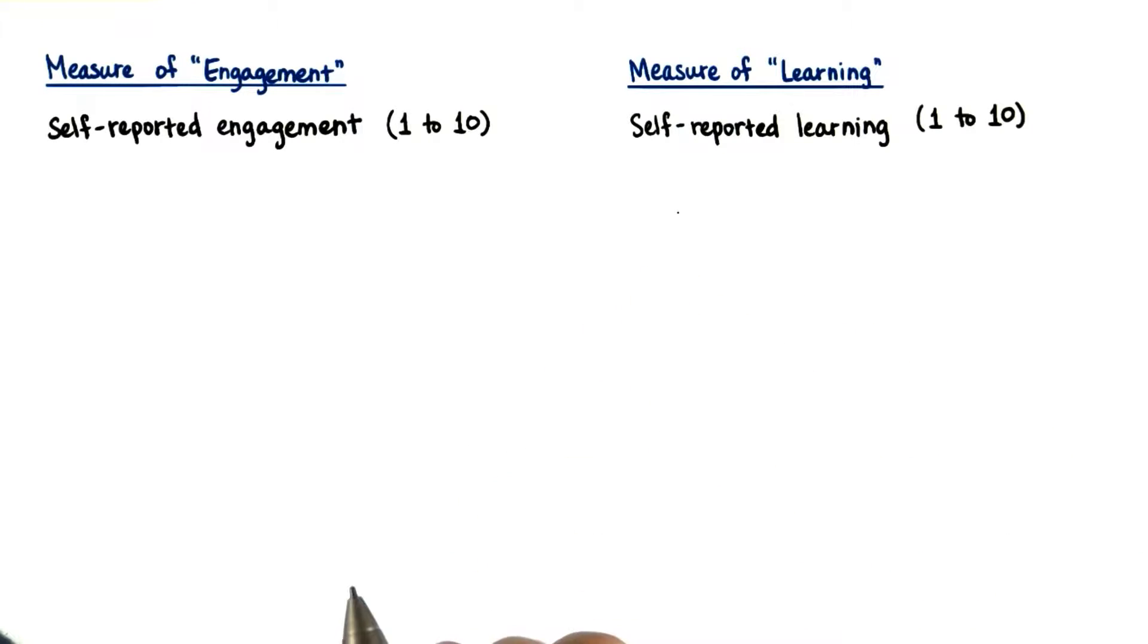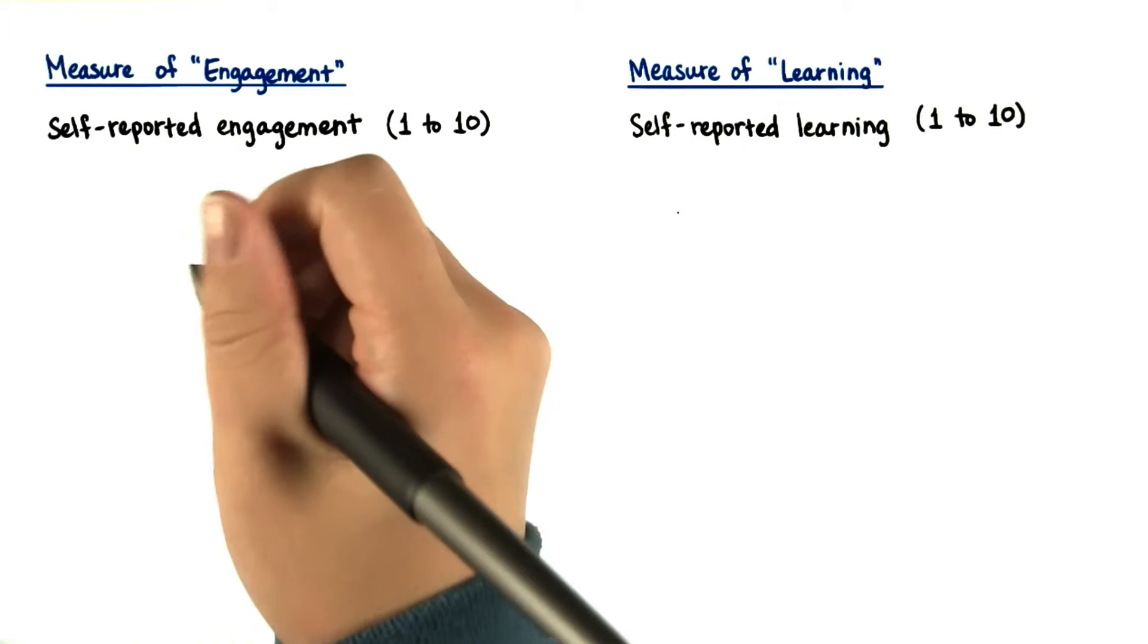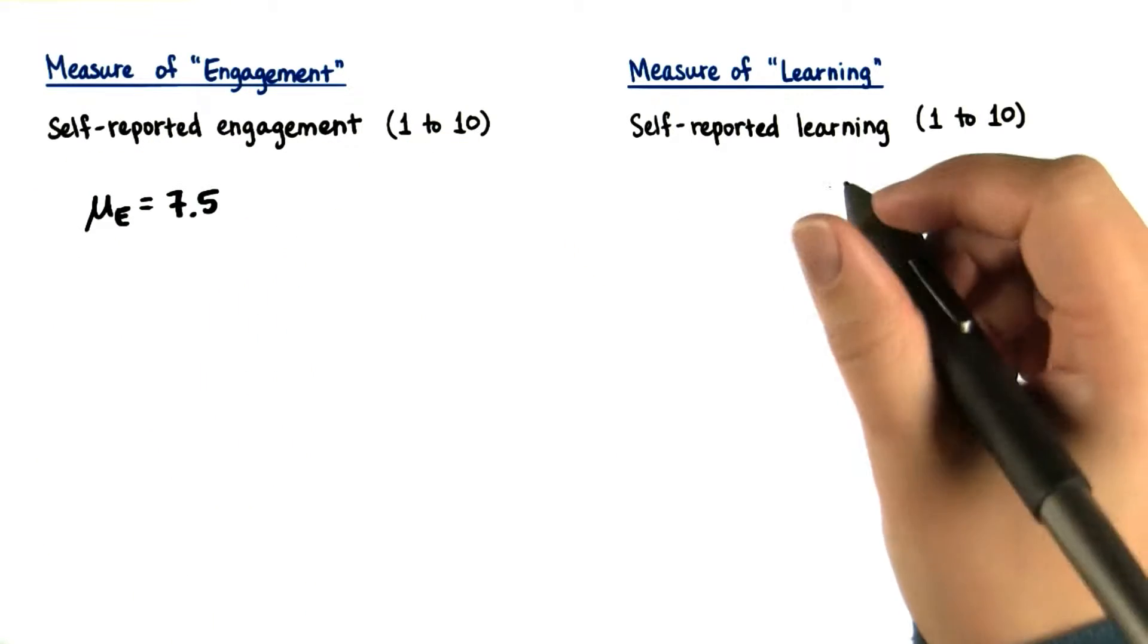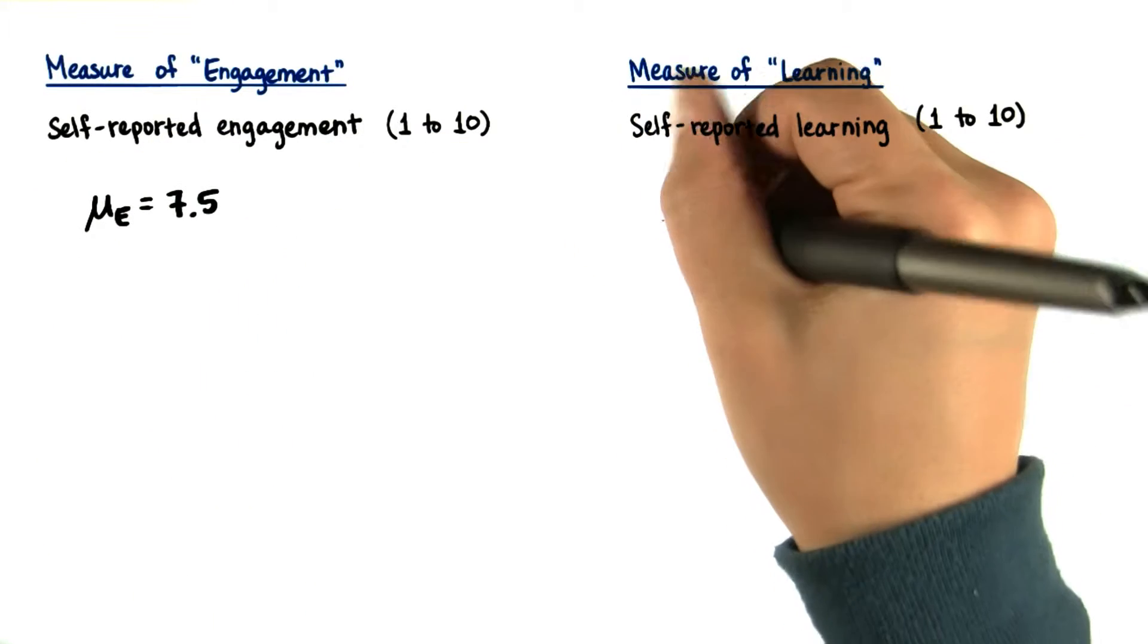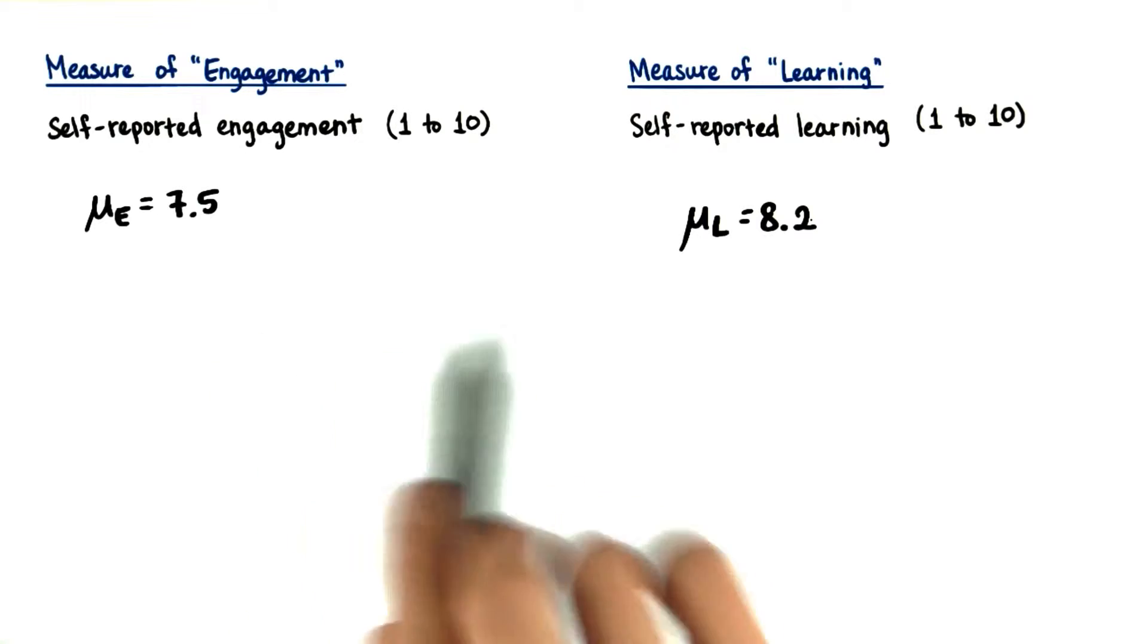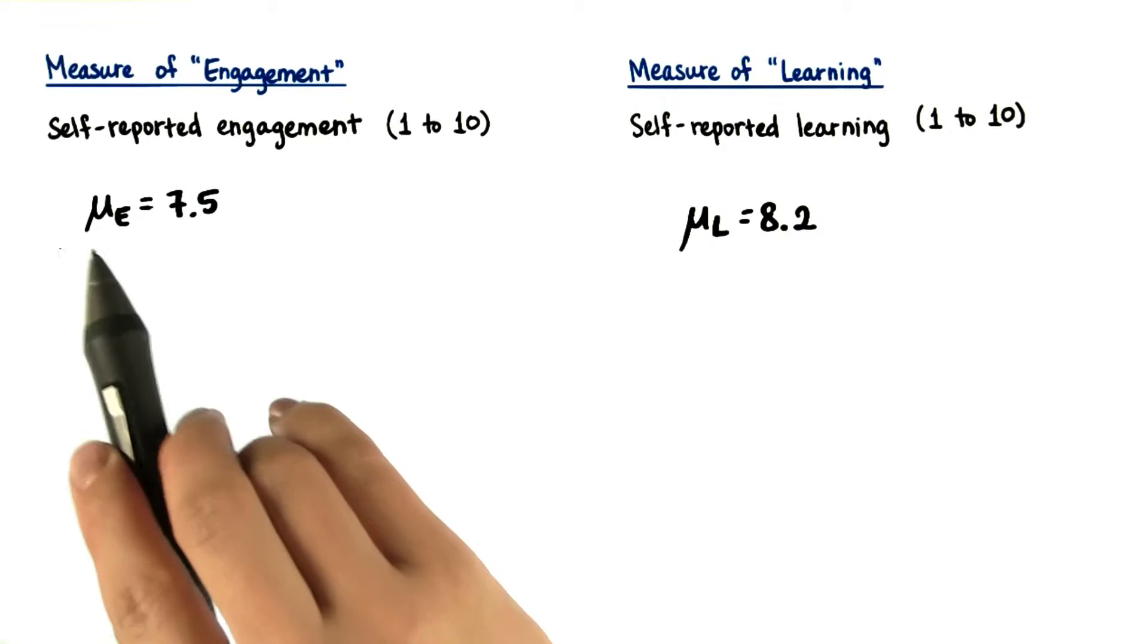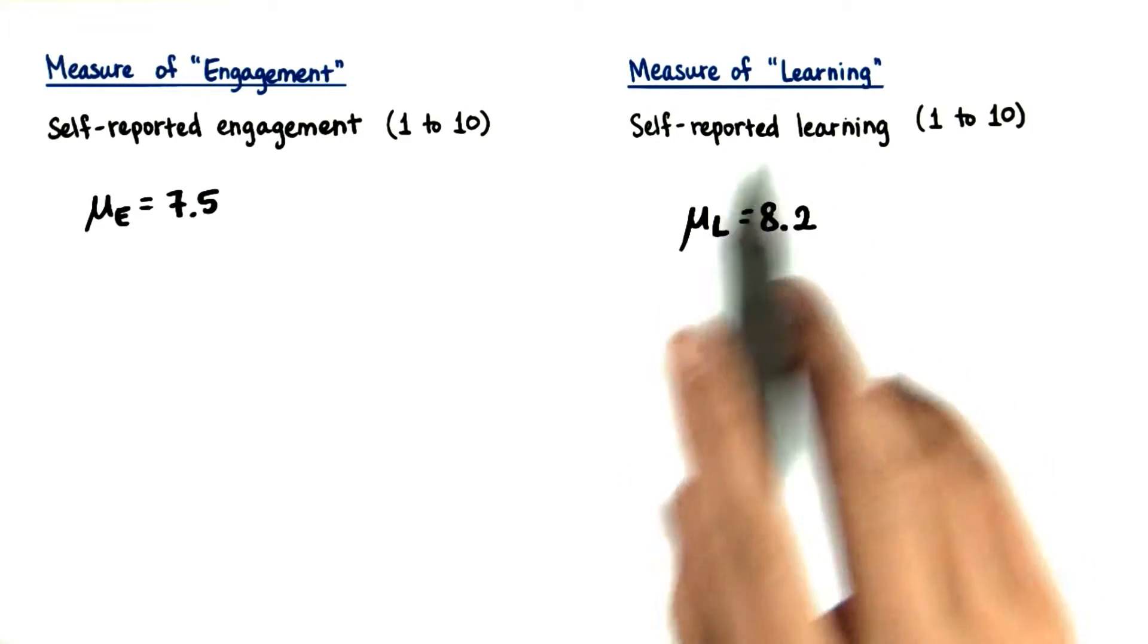but let's pretend that we get an average of 7.5 for how engaged you are, and an average of 8.2 for how much you think you're learning. So these are hypothetical population parameters, mu sub e for engagement and mu sub l for learning.